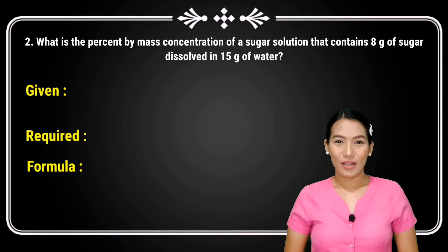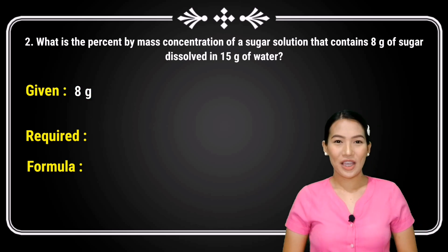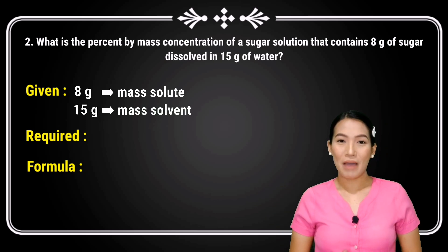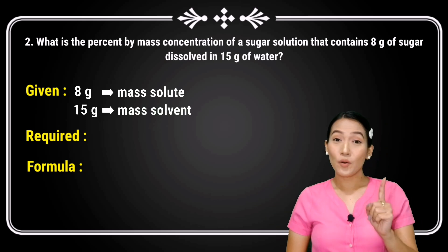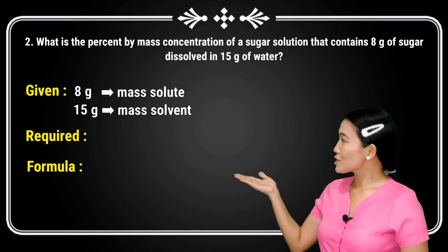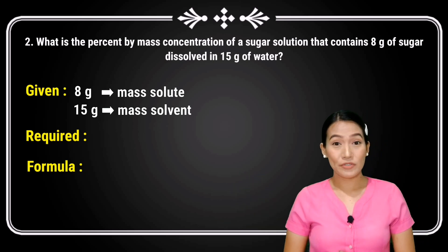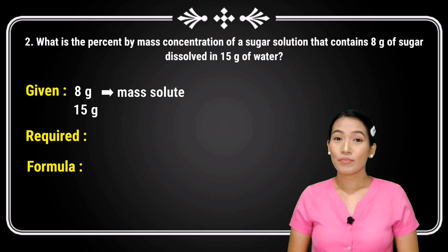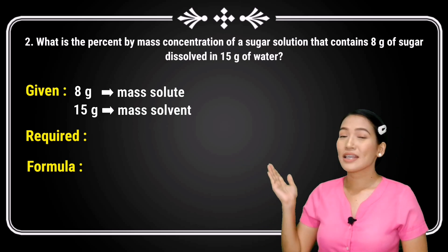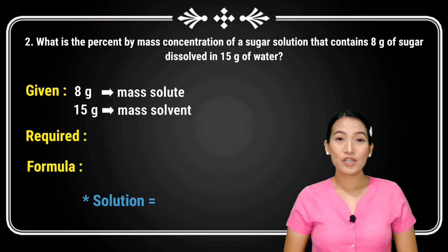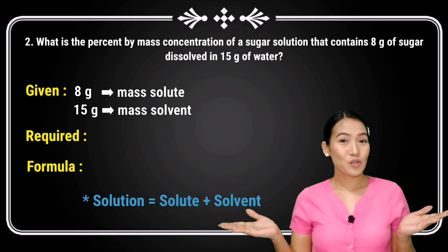In this problem, the given are 8 grams, which is the mass solute, and 15 grams is the mass of solvent. Notice that in this problem, it does not give you the total mass of solution, but rather the mass of solvent is given. But remember that in order to get the amount of solution, you simply add the solute and the solvent.